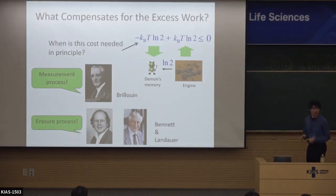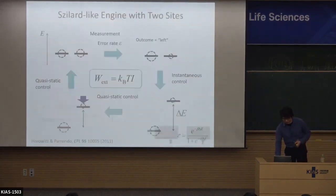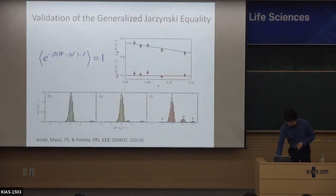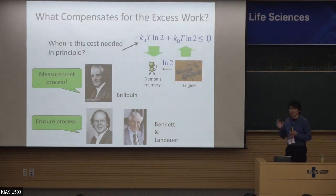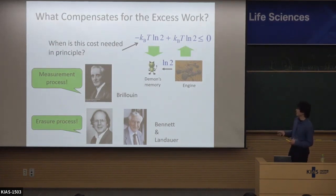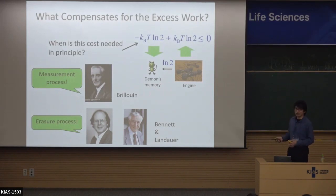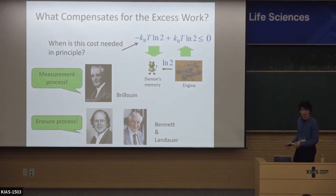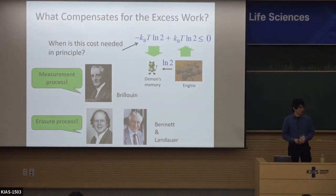Tomorrow I will talk about the thermodynamics of Maxwell's demon itself. So far I have considered the operation of Maxwell's demon and how the second law of thermodynamics for the system is modified. But tomorrow there's another topic: how about the thermodynamics of Maxwell's demon itself? The system is of course a thermodynamic system, but Maxwell's demon itself is also a thermodynamic system. To get a comprehensive understanding of the thermodynamics of information, we need to consider the demon itself as a thermodynamic system. There is a long history of discussions about this, and I will start with a brief review of that history and then talk about some modern formulation based on stochastic thermodynamics.